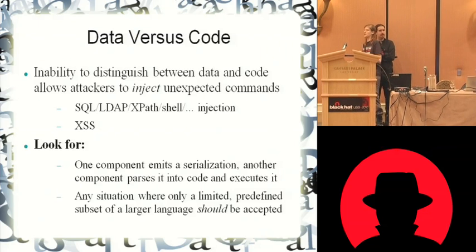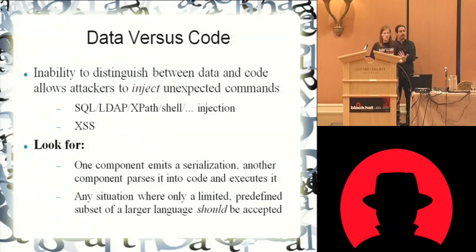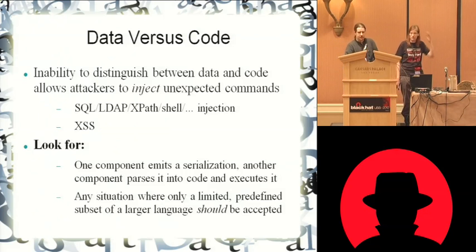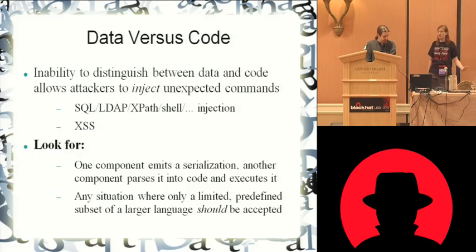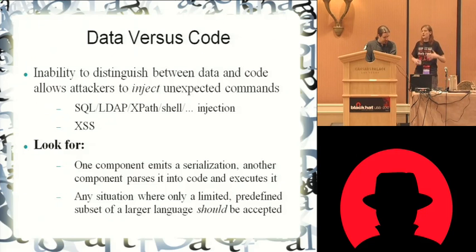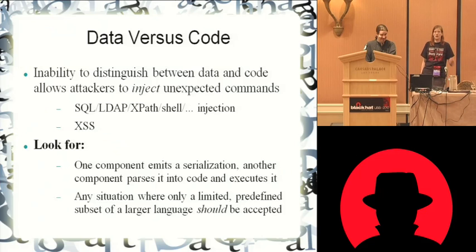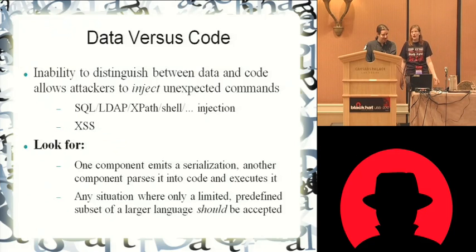Another pain point you're going to want to look for is places where you should just be accepting a small subset of some language. The most common example these days is RESTful APIs in web applications. Every call is going to be an HTTP call, but only a small subset of the entire possible universe of HTTP requests is acceptable. So what you really want to do on the defense side is constrain what you're willing to accept. On the attack side — of course, no one actually does that — you want to look for places where you can send something in a very expressive language, and people are not necessarily going to be expecting things that they didn't predefine.